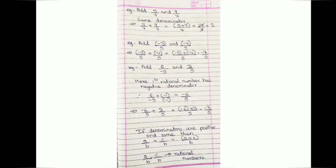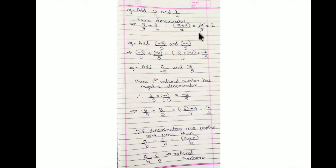Let us take some examples. Suppose you want to add 5/7 and 9/7. Both denominators are the same, so we add only the numerator part: 5 plus 9 over 7, which equals 14/7. Now bring this to its standard form and you will get the value as 2.